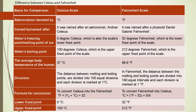Let's understand the difference between the Celsius and Fahrenheit scales. The Celsius scale abbreviation is degree Celsius (°C) and the Fahrenheit scale is degree Fahrenheit (°F). The Celsius scale is named after the astronomer Anders Celsius, and the Fahrenheit scale is named after the physicist Daniel Gabriel Fahrenheit.